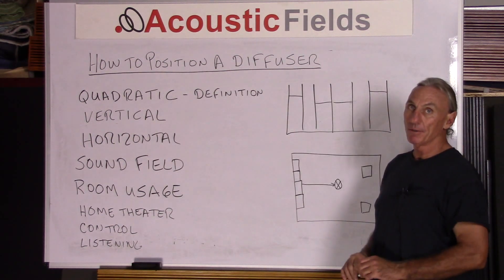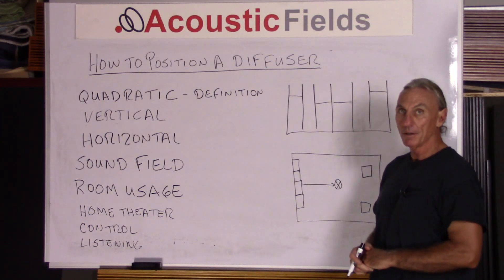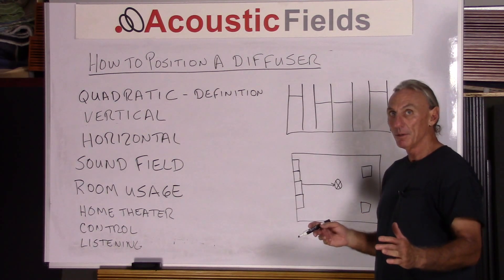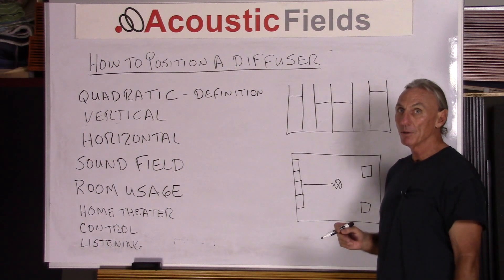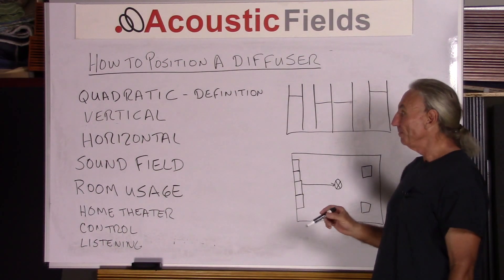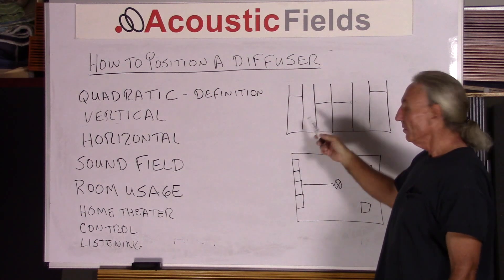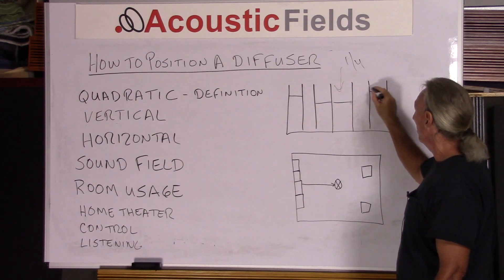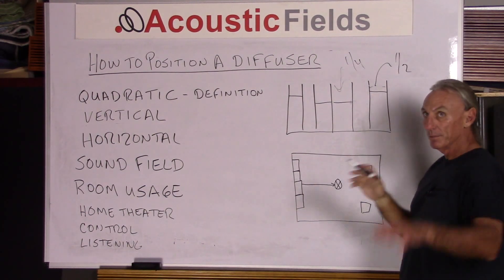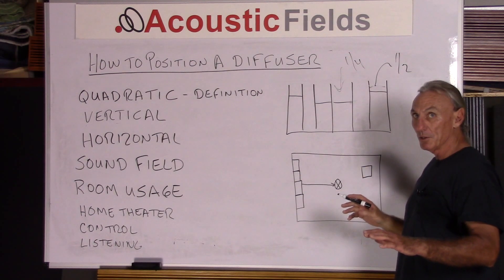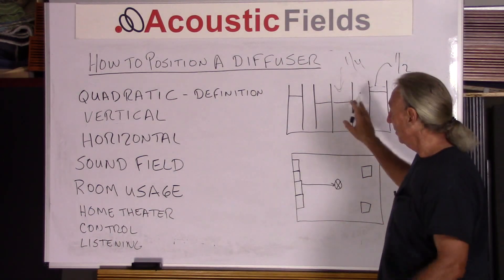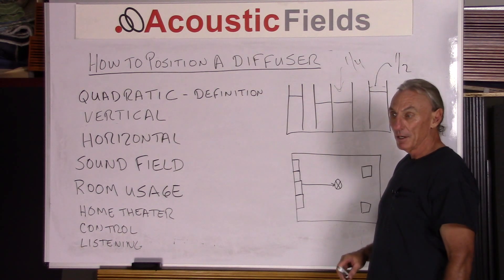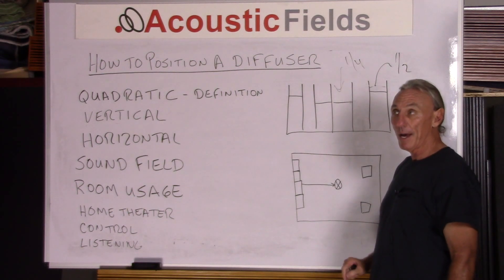We always work with quadratic diffusion, and everybody that looks at our website and talks to us through email and telephone realizes that we like quadratic because it's consistent and predictable — it has a measured frequency response, so it's a great acoustical tool, but it's widely misunderstood. With a quadratic diffuser, we have a series of wells, and each of these wells is based on a quarter wavelength rule, with each well width based on a half wavelength rule. It's a really versatile tool in distribution and frequency response, and we support it tremendously as a great tool in your acoustical palette.